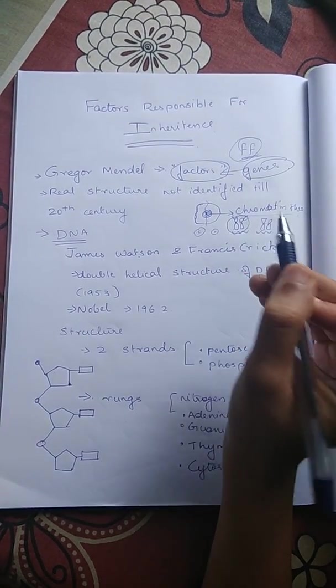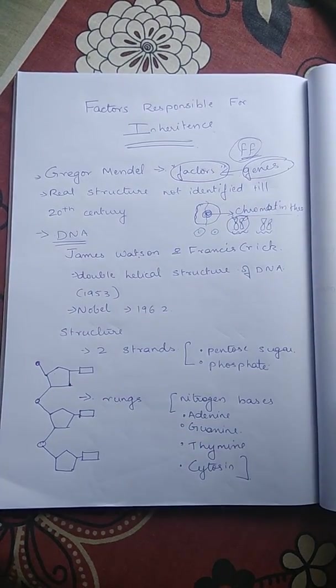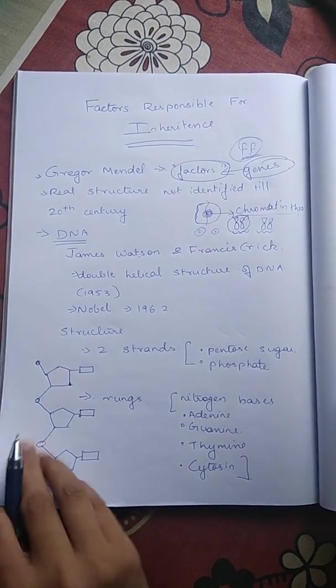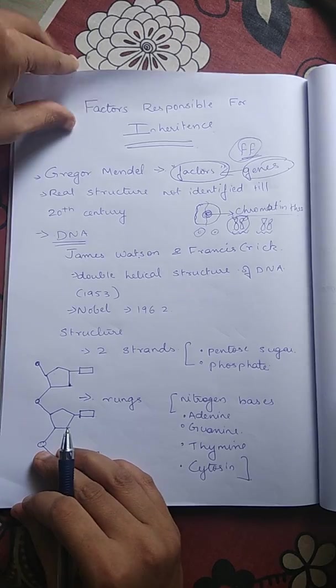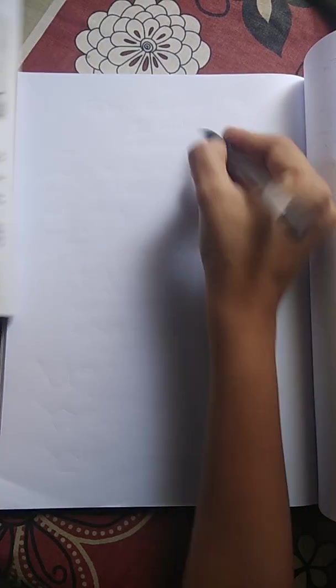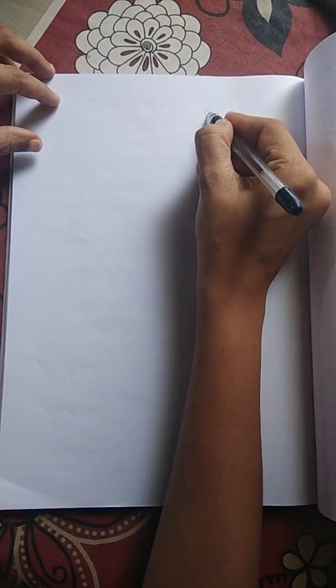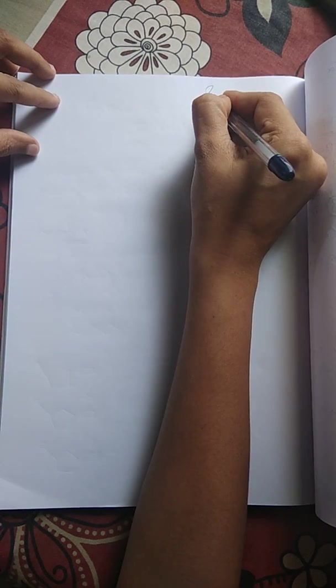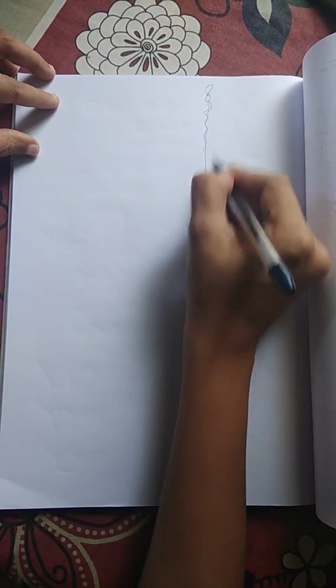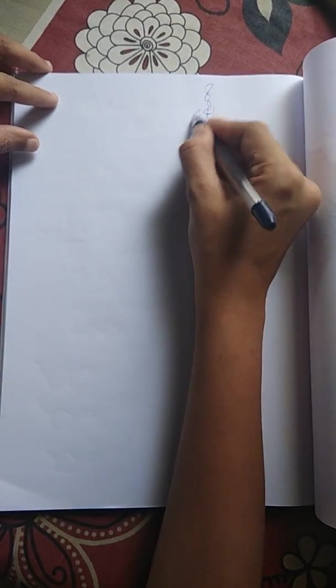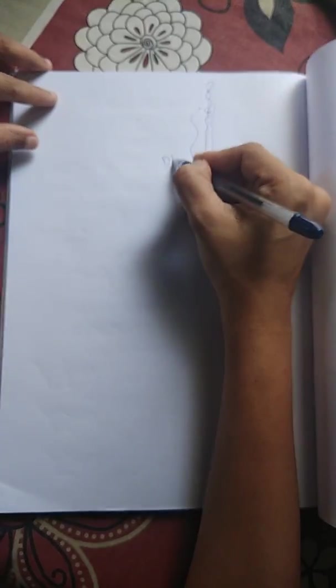There are 22 pairs of autosomes and one pair of sex chromosomes. The 23 pairs include 22 autosomes pairs and one pair of sex chromosomes, making 46 chromosomes total.